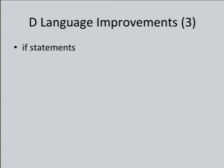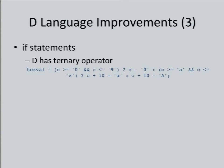The next improvement is something we want to make to the D language but requires more investigation — that's if statements in the D language. D has a ternary operator, so you have this functionality, but you get code that's very hard to read. If you look at an example from the DTrace manuals, if you look at it long enough you'll figure out what it's doing because it's a common ternary operator example. However, when you first look at it, your eyes glaze over. This is worse if you want to give this to someone without a lot of experience — this is one of those barriers to entry. We would really like if statements to improve readability.